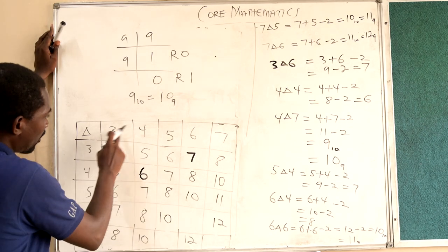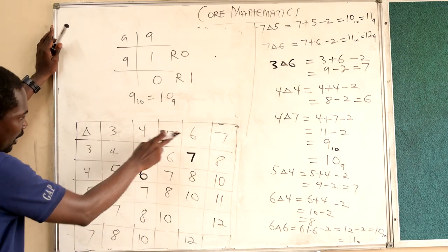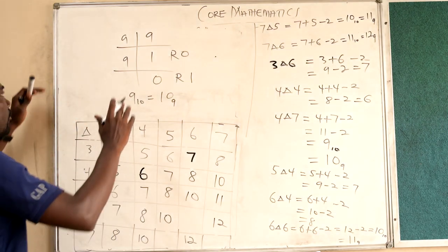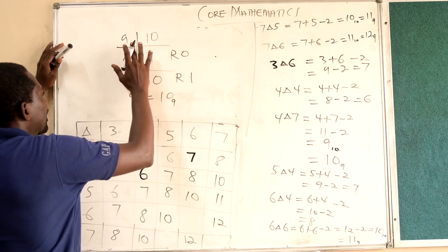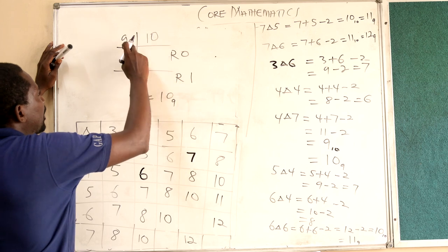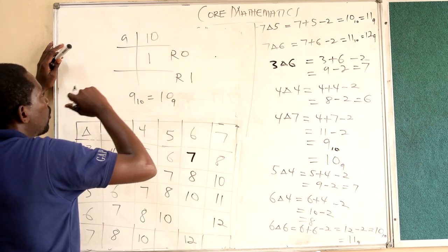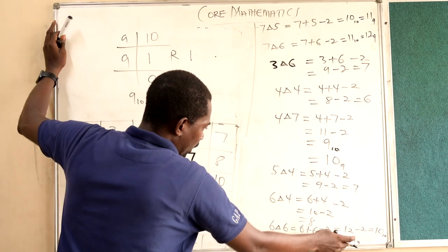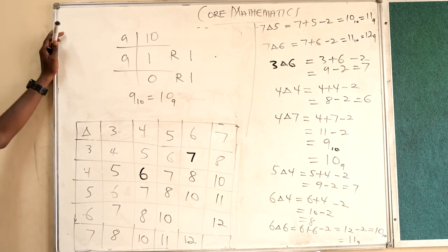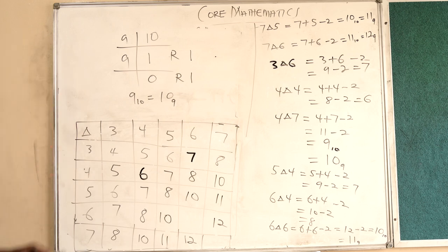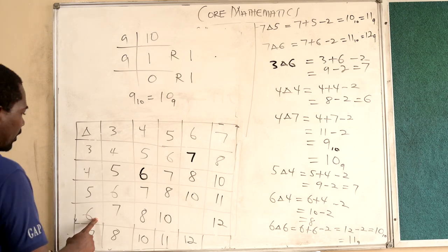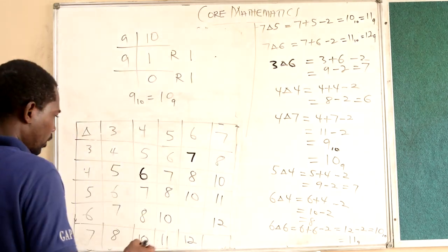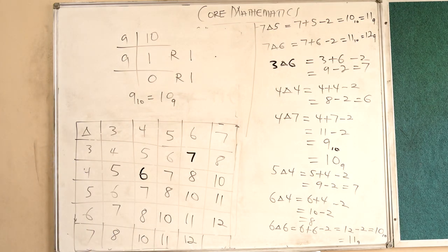Then we have 6 triangle 6, which is 6 plus 6 minus 2, which is 10. 10 in base 9 — 9 goes into 10 once with remainder 1 — so 10 in base 9 is 1 and 1. So 6 triangle 6 gives us 1 1 in base 9.